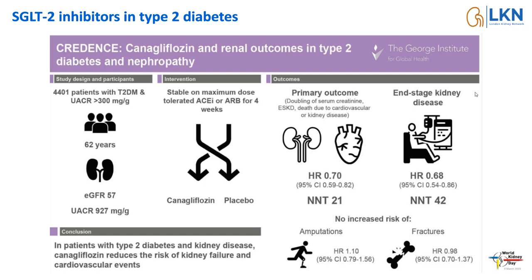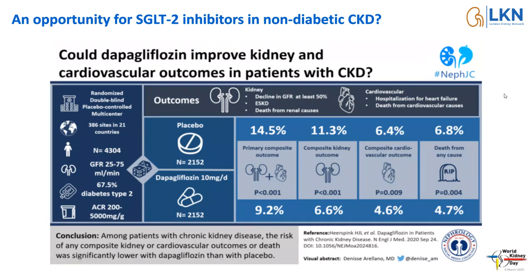The natural question is whether that improvement only relates to those with type 2 diabetes. DAPA-CKD recruited people with and without diabetes who had proteinuric kidney disease. The primary outcome was again a composite of kidney and cardiovascular outcomes, and there is a striking difference between the dapagliflozin treatment group and those who weren't treated, again a relative risk reduction of about 30%. This is a stop moment for thinking about general CKD care and an opportunity to think about how we can do things better.